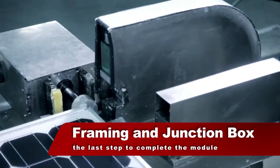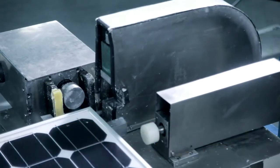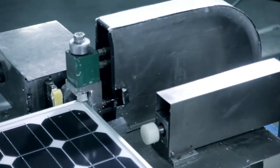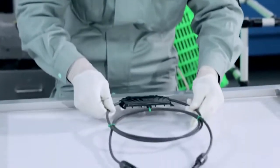The module is fitted with an aluminum frame, and a weatherproof junction box is mounted on the rear to allow external wires to be connected.